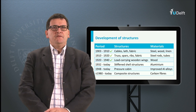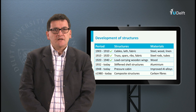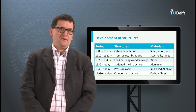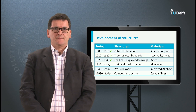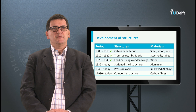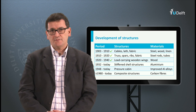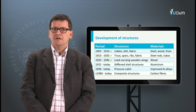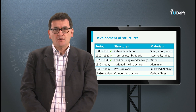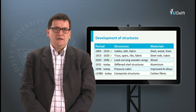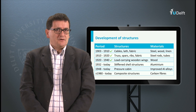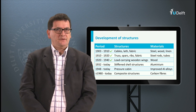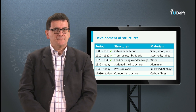In the previous lectures we discussed the aircraft structures used in the first decades of the 20th century. Typical elements of those structures were trusses made of wires, tubes or bars, the use of linen for the skin, and wood used as material for wings.